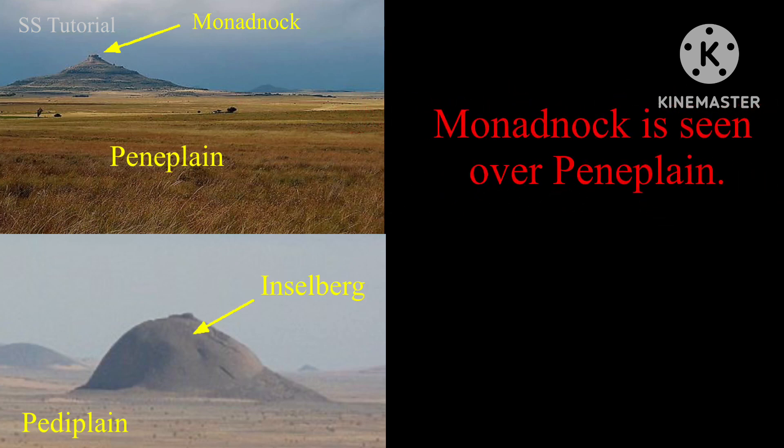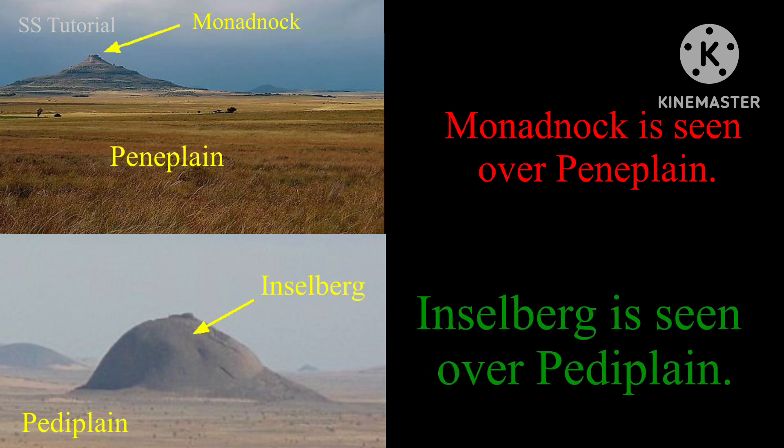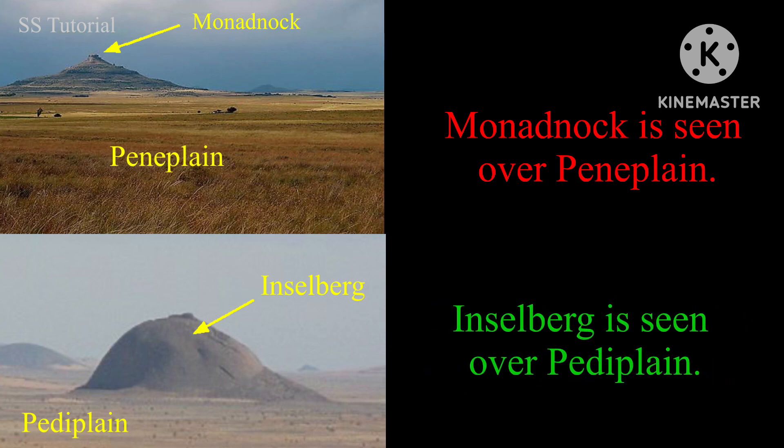Monadnock is seen over a peneplain. According to William Morris Davis, a peneplain is a vast plain land that originates due to river erosion at the last stage of the cycle of erosion theory. Whereas Inselberg is seen over a pediplain. According to L.C. King, a pediplain is a vast plain land originated due to wind erosion at the last stage of the cycle of pediplanation theory.